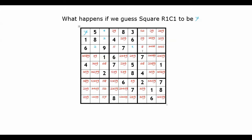Now we have two more squares to be finalized to be 5. We remove 5 from its row, we remove 5 from its column, and we remove 5 from its box.